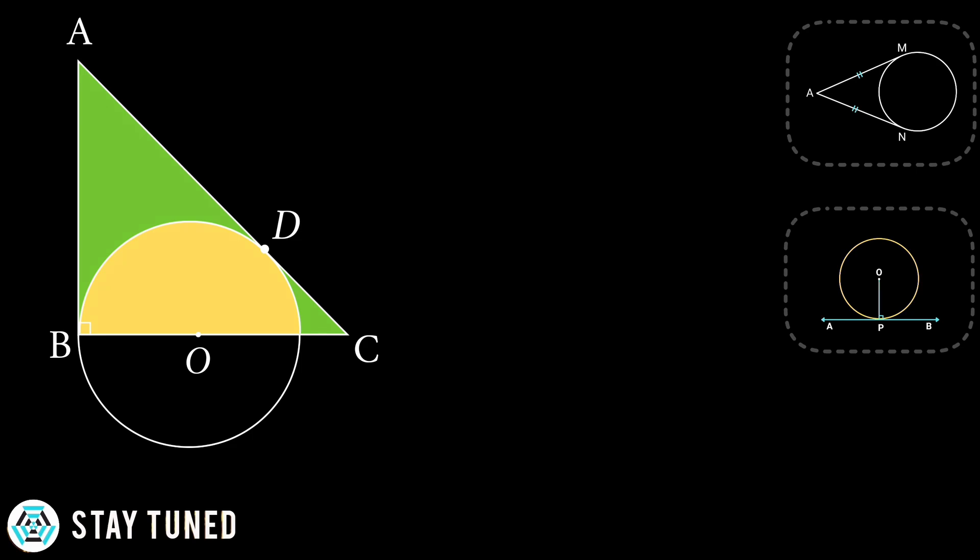So OD, which is the radius, will be perpendicular to AC from the second theorem.